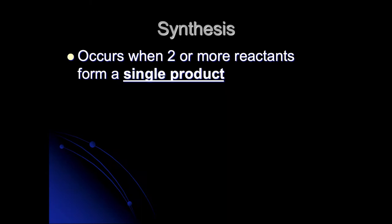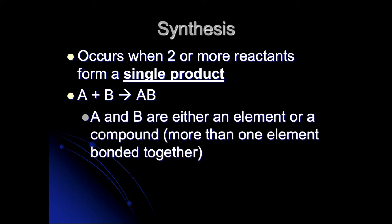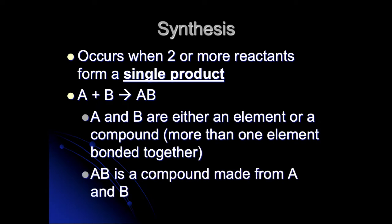The first one is called a synthesis reaction. The synthesis reaction occurs when you have two or more reactants that come together to form a single product. At the end of your reaction, you're going to notice that you only have one thing on the product side. A general equation would be A plus B gives you AB, the compound. A and B are either an element or a compound, and AB will be a compound made from the A and B from the reactant side.